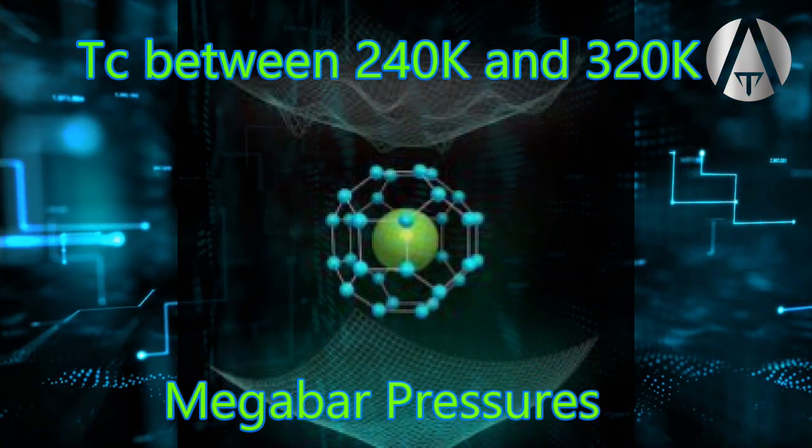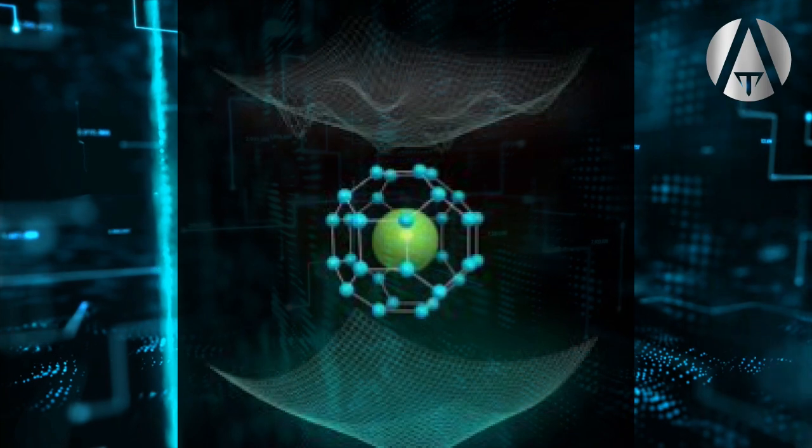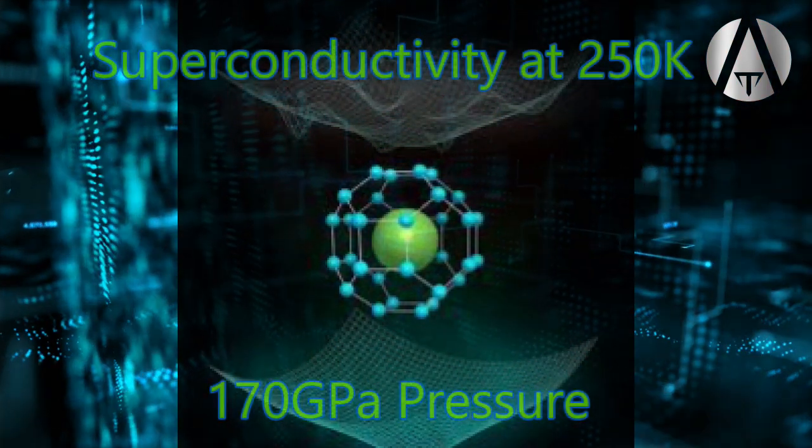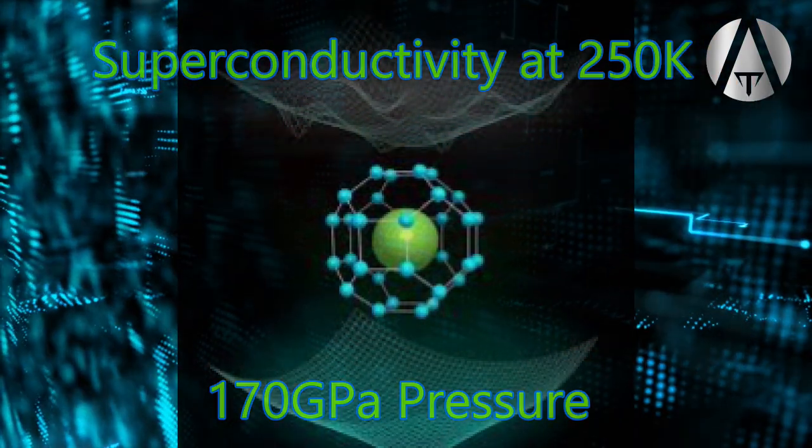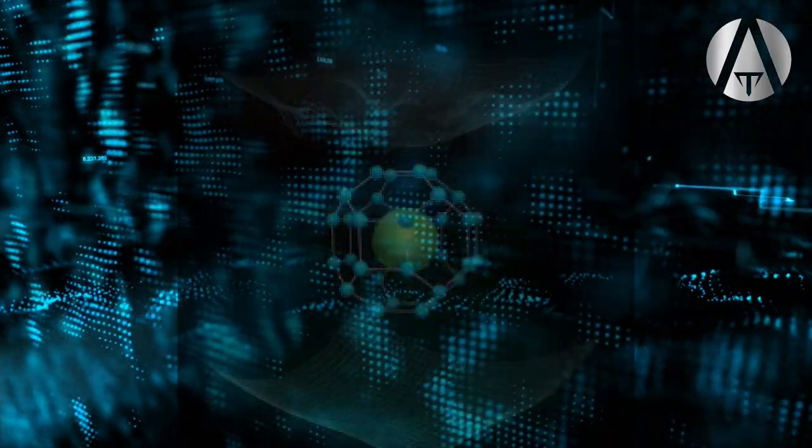The scientists created crystals of one lanthanum atom for 10 hydrogen atoms, and their studies have reported superconductivity with a critical temperature of around 250 Kelvin at a pressure of about 170 gigapascals. This is the highest critical temperature that has been confirmed so far in a superconducting material.